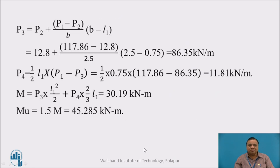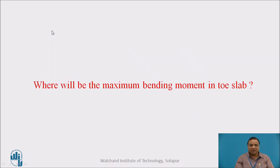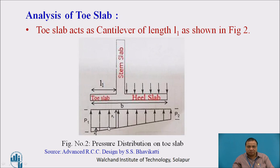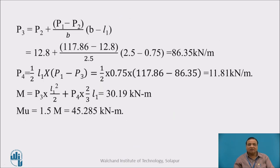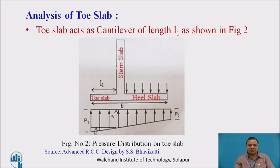Next, we have to determine P3, which is at the face of the stem. It is P2 plus this particular variation. Up to here it is P2, P2 plus this remaining portion. Up to P2 it is P2 UDL, then the remaining portion we calculate by similar triangles: P2 plus P1 minus P2 divided by B into L1. This is 12.8 plus 117.86 minus 12.8 divided by 2.5 into 2.5 minus 0.75, which is L1. It works out to be 86.35 kilonewton per meter.